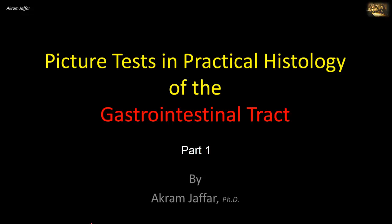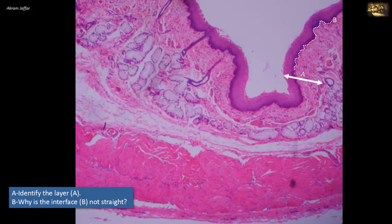Identify layer A, and why is the interface B not straight? This is a section of the gut tube showing the four distinct functional layers that characterize the tube. These are the mucosa, submucosa, muscularis externa, and adventitia.